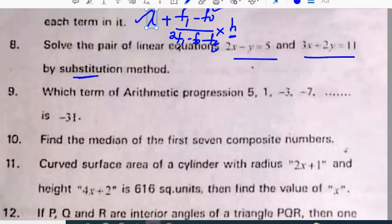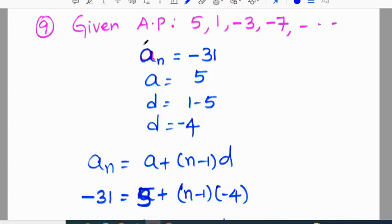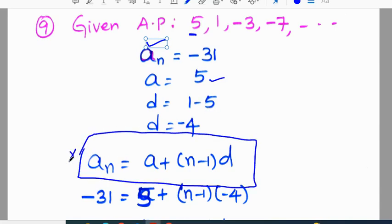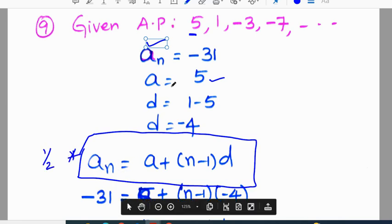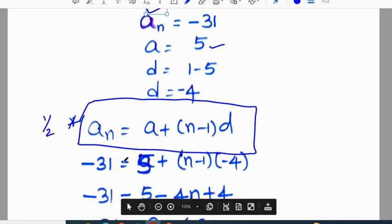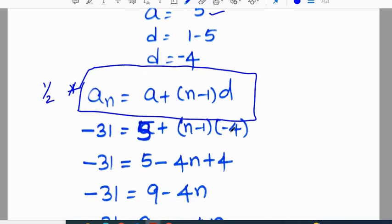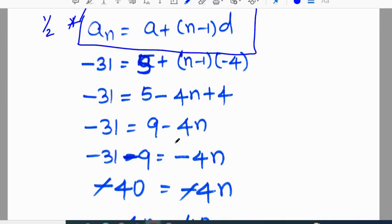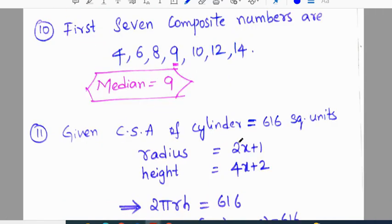Which term of arithmetic progression 5, 1, -3, -7 is -31? So -31 is the nth term. A is equal to 5 is the first term. D is equal to a2 minus a1, which is 1 minus 5 equals -4. You have to apply the formula. An is -31, replacing the values: a value is 5, (n minus 1) into -4. After doing simple calculation we will get n value as 10.